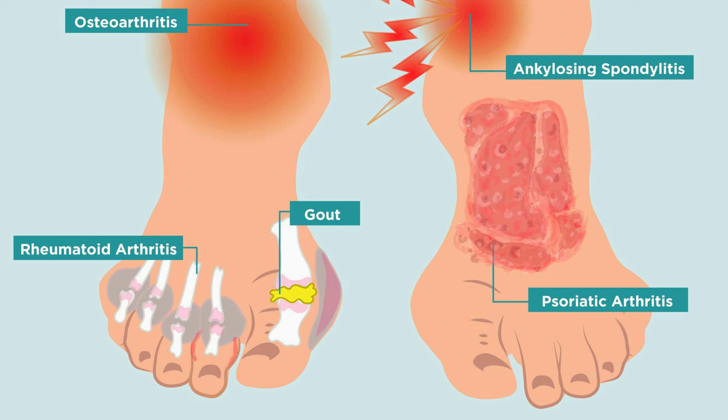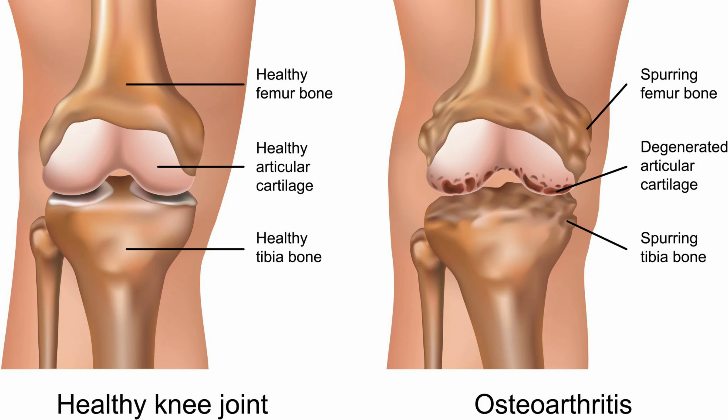First, let's look at the most common type of arthritis, which is osteoarthritis. This is the most common condition in people older than 14, and it's often more common in women and those with a family history of this condition.